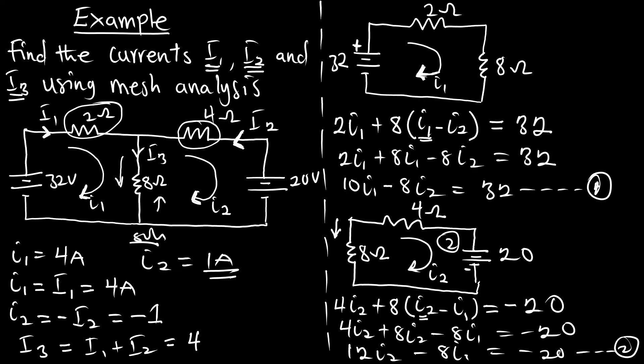So I3 = 3 amperes. You can use the branch method to verify these answers. This concludes the mesh current analysis. In the next episode we will solve more examples using mesh analysis. Please subscribe to the channel, like the videos, and leave your comments. Thank you.